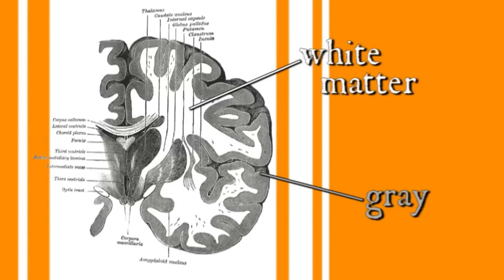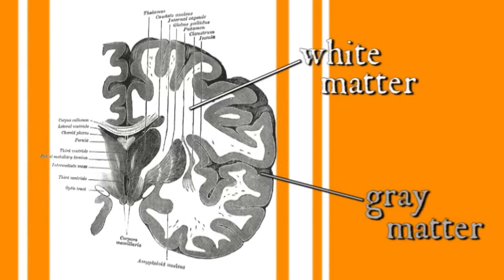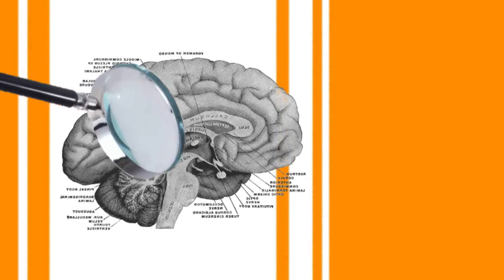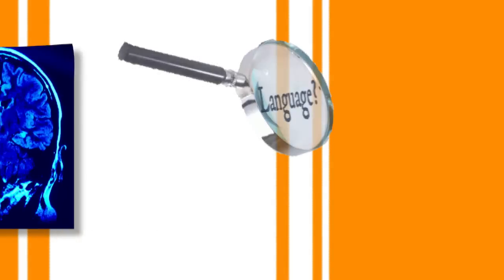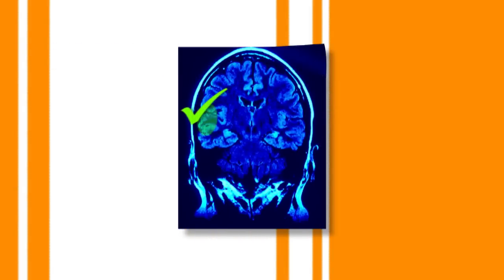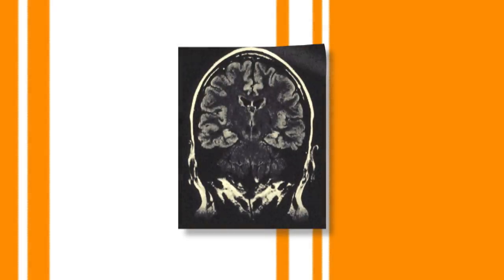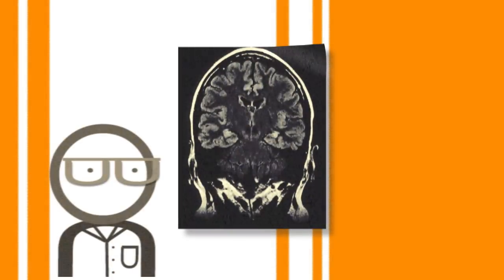The first real evidence of the brain's role in language came not from observing normal healthy brains using language but from damaged brains. This started back in the 1800s when pioneering researchers dissected the brains of aphasiacs.